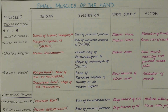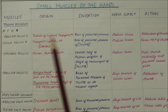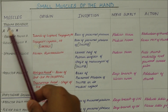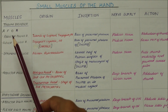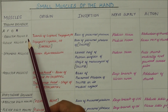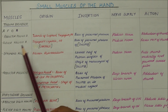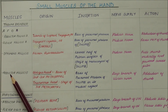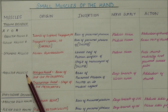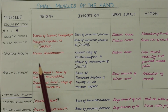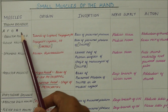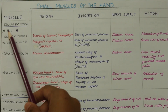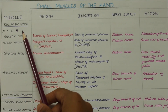Let's look at the muscles of the thenar eminence. We have the abductor pollicis brevis, the flexor pollicis brevis, the opponens pollicis, and the adductor pollicis. An easy way to remember this is by remembering the word AFOA.